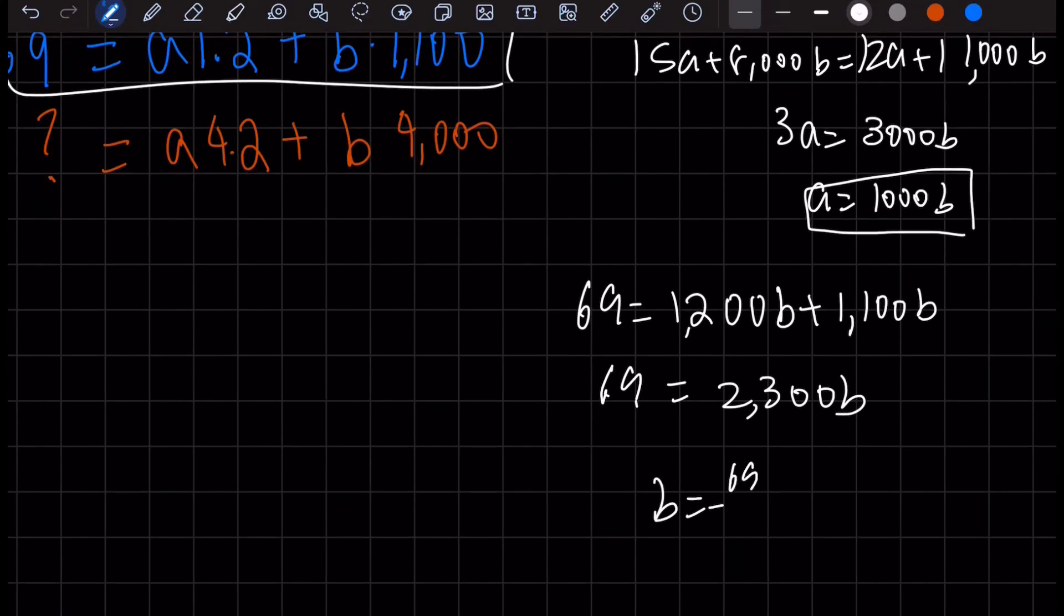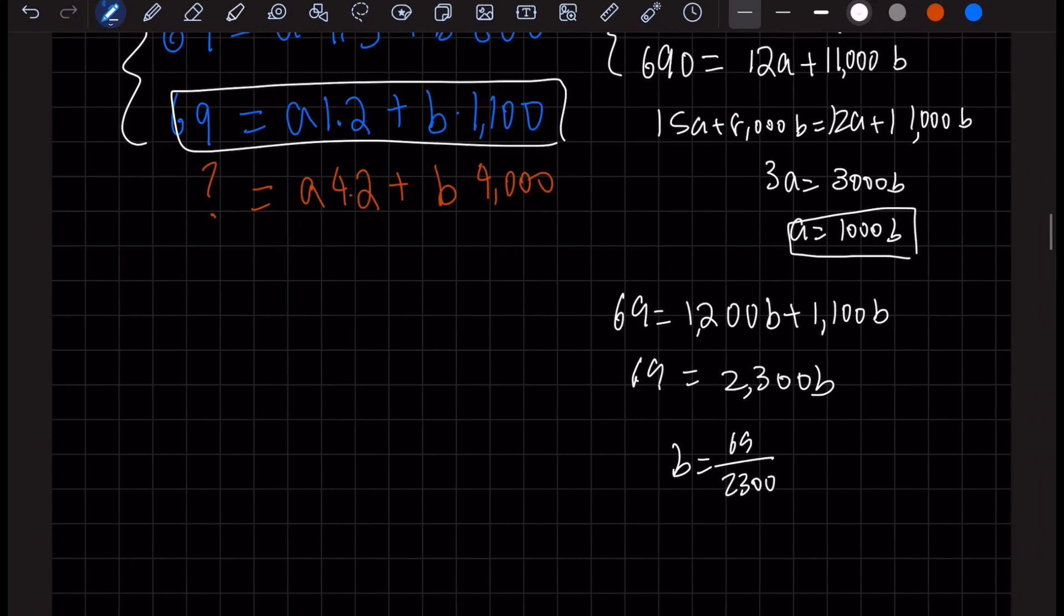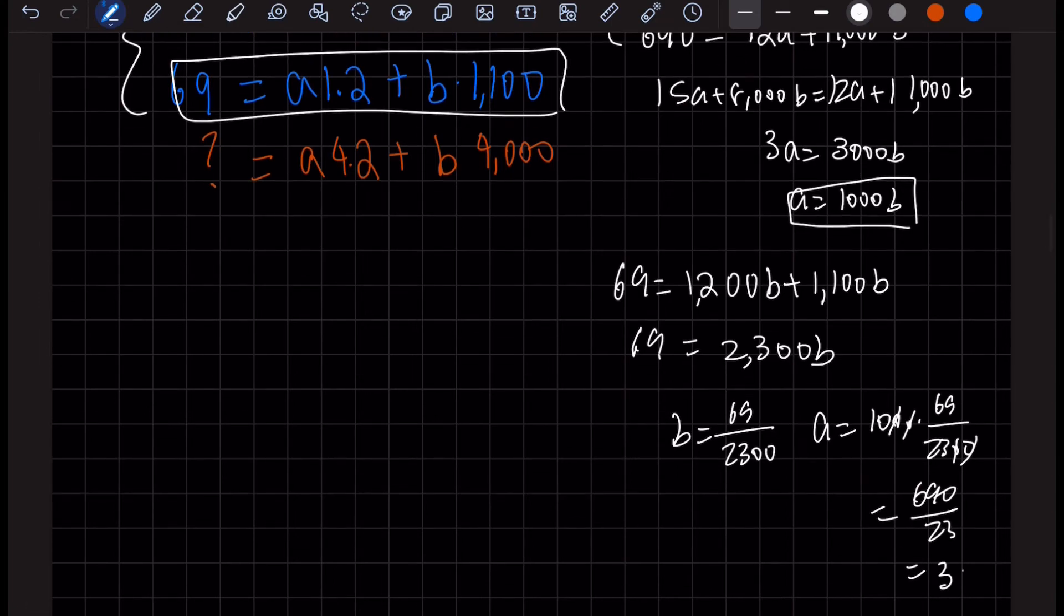So B equals 69 over 2,300. And that means A equals 1,000 times 69 over 2,300. Cancel out the zeros, 690 over 23, that gets you 30.